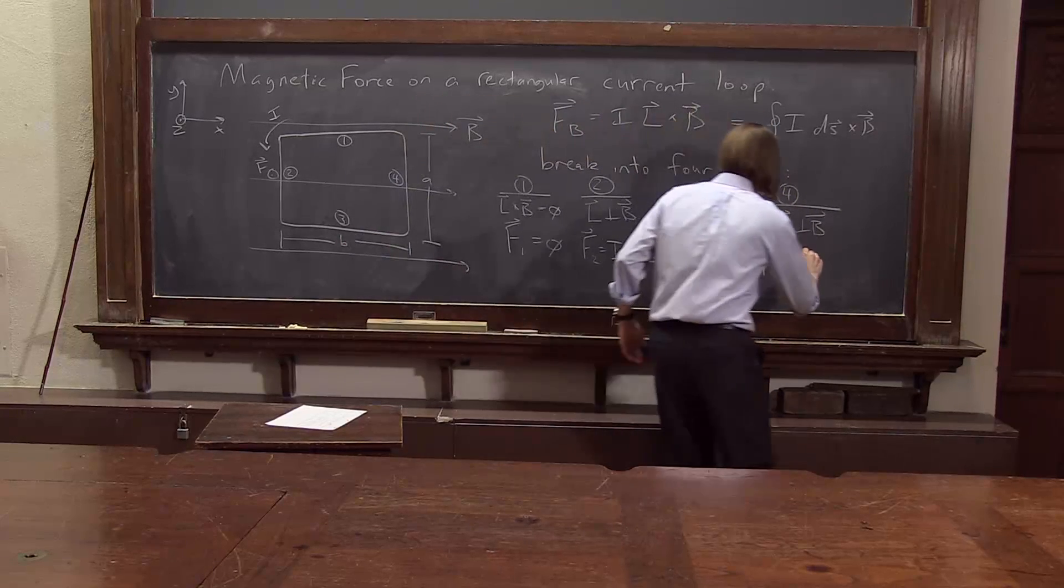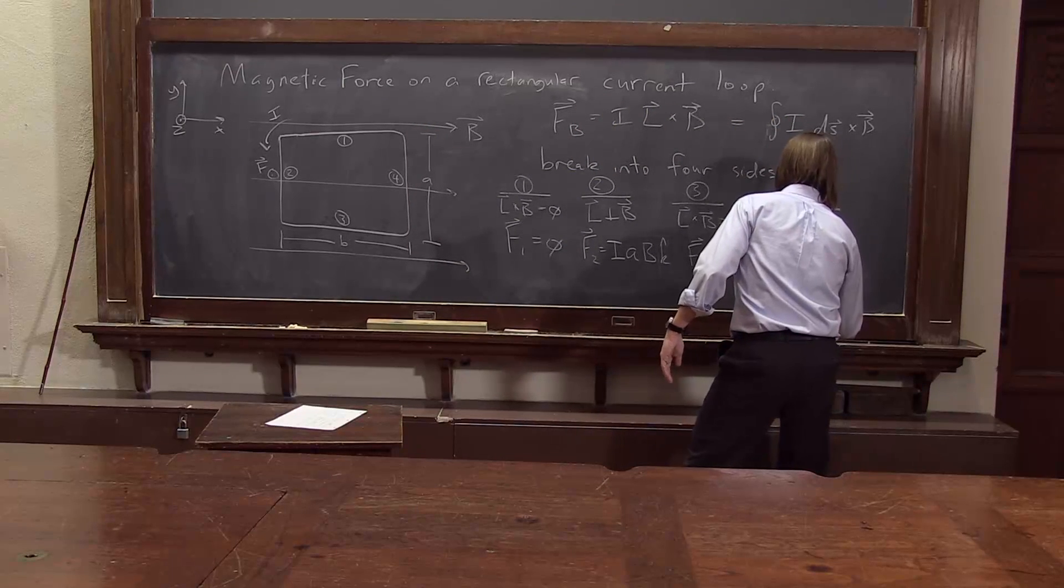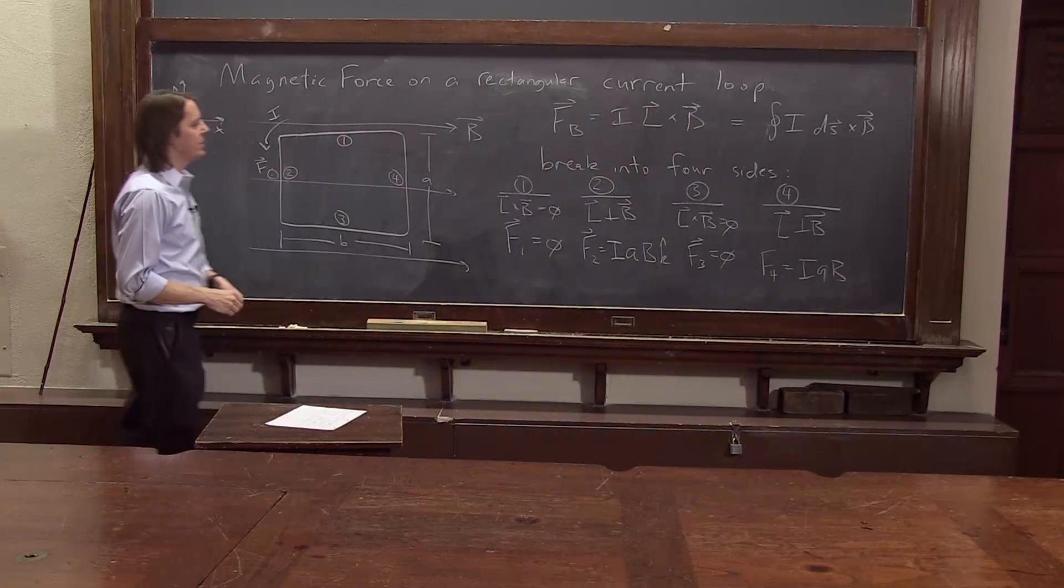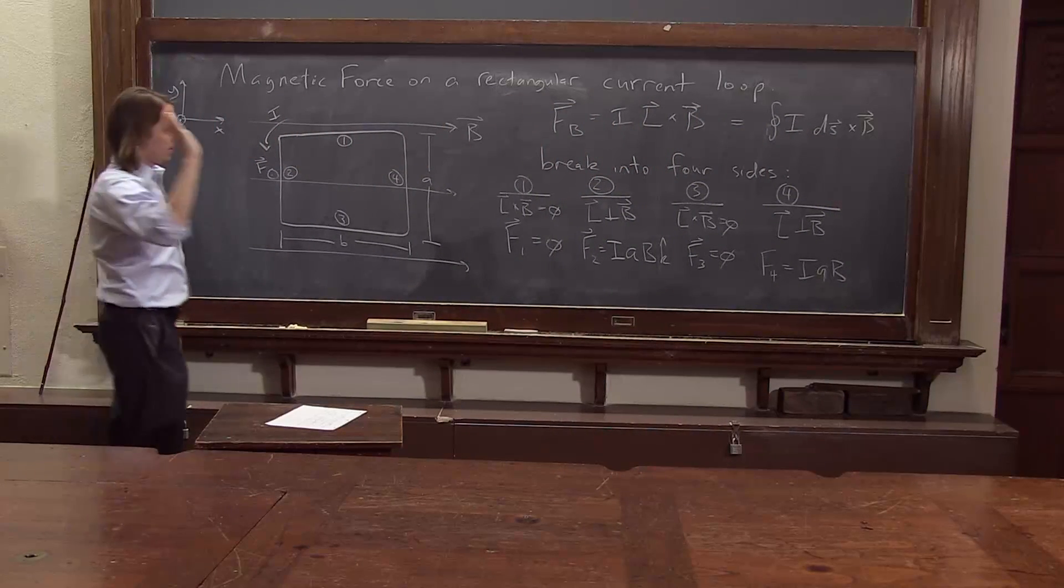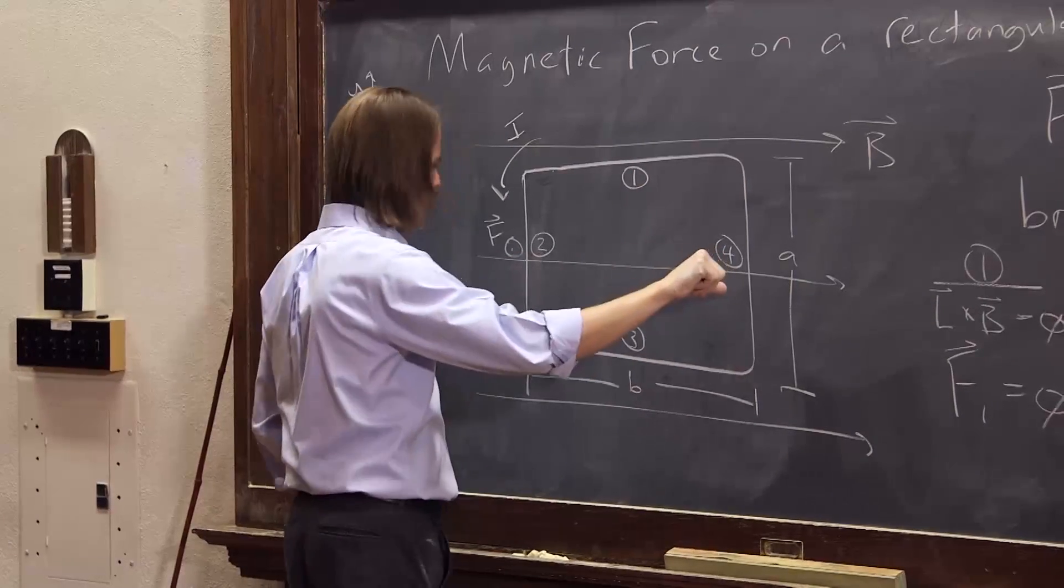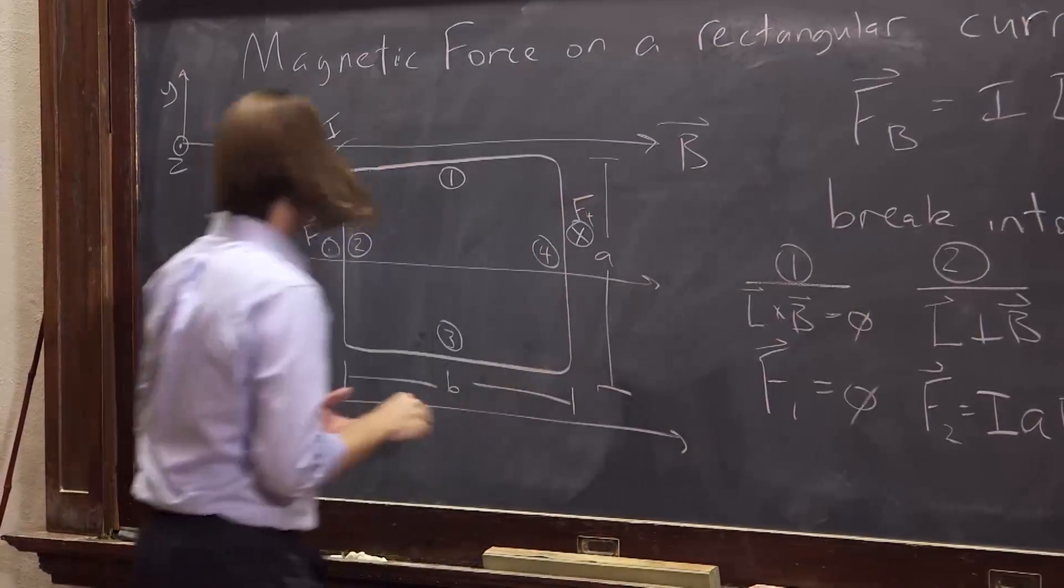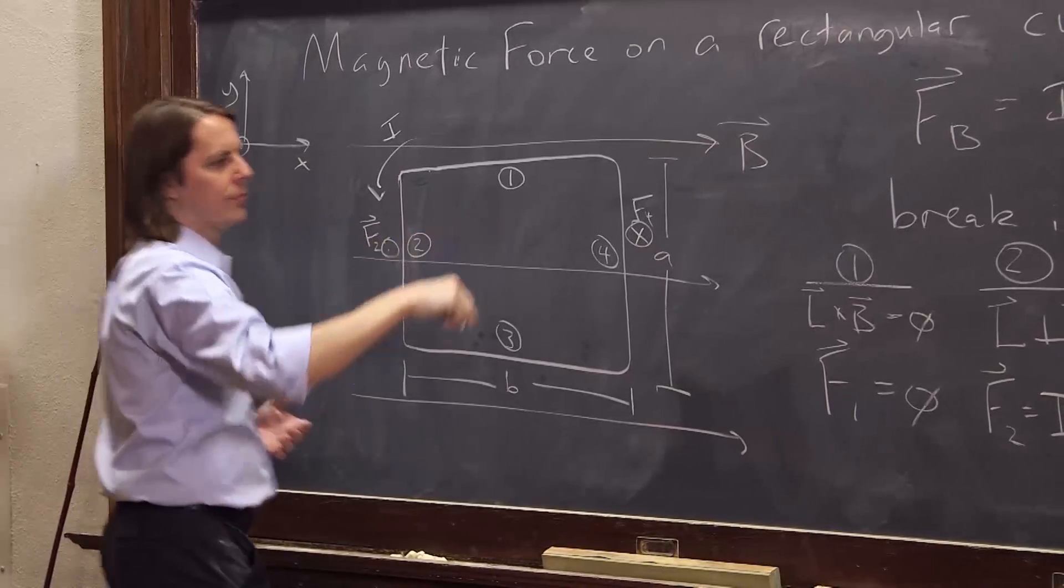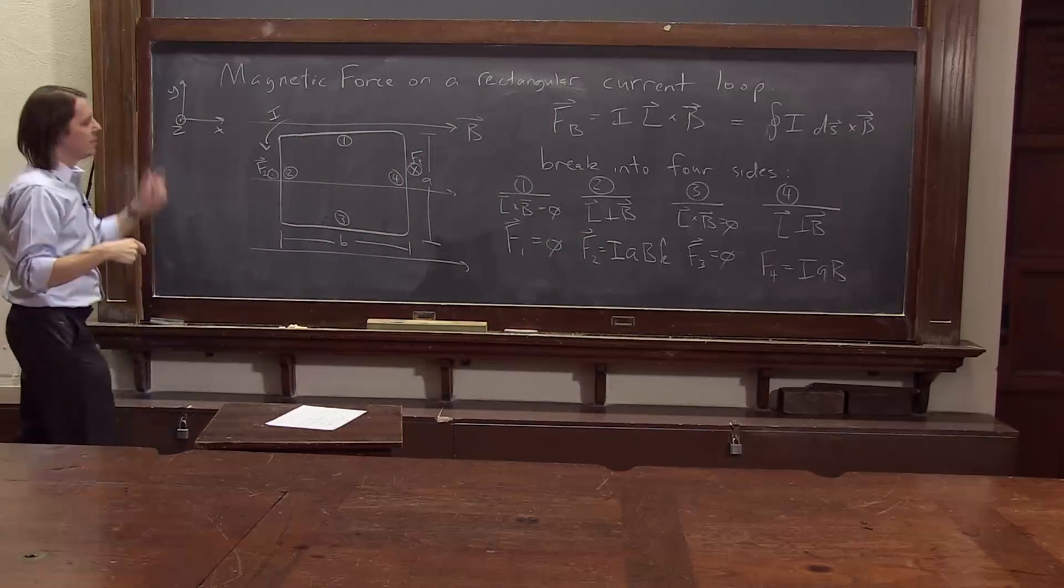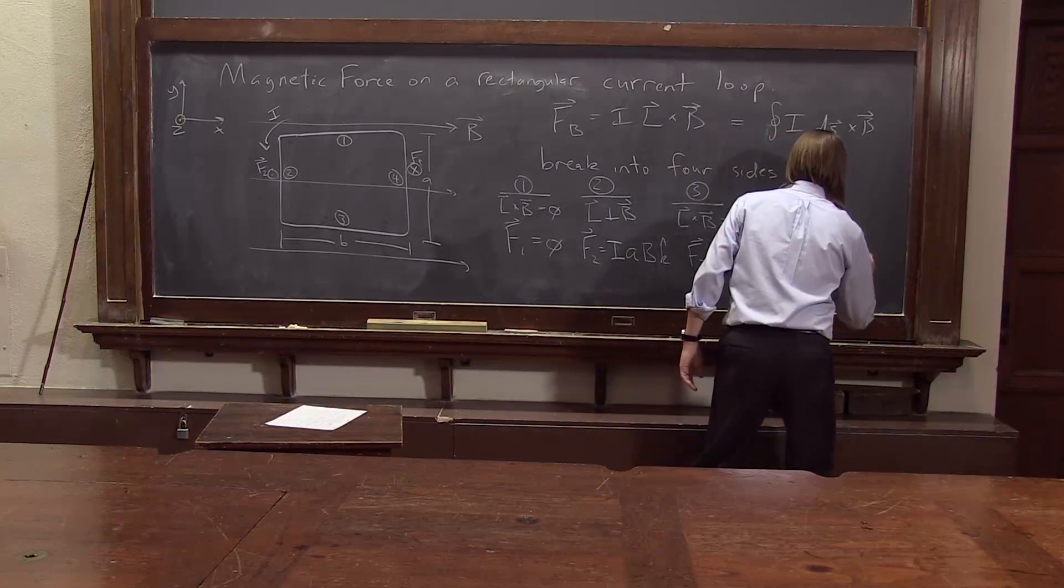So F_4 equals what? I. Well, they all have the same I. And it's this side, so it's A. And it's a uniform B, thank goodness. I A B. And now in what direction? Let's see. A cross B is in. So on this one, force 4, this was force 2, force 4 is in. Well, in means in the negative z direction. So put a negative sign there, k hat.